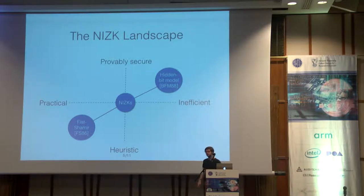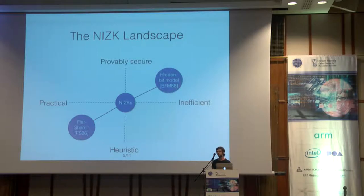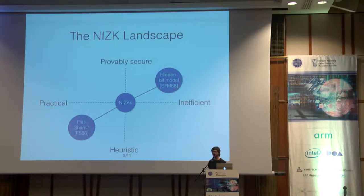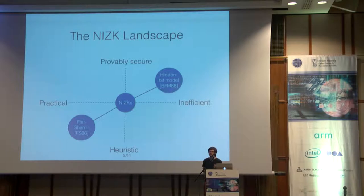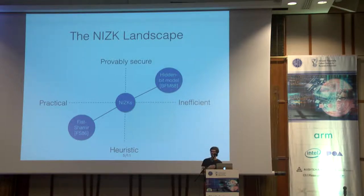At the other end of the spectrum, we had the heuristic which starts from an interactive zero-knowledge proof and makes it non-interactive using a hash function. It leads to proofs that are efficient for most statements of interest and works very well, but the exact security guarantees it gives are quite unclear. It gives some provable security guarantees in idealized models, but in the standard model we don't really know. It's a hard problem.